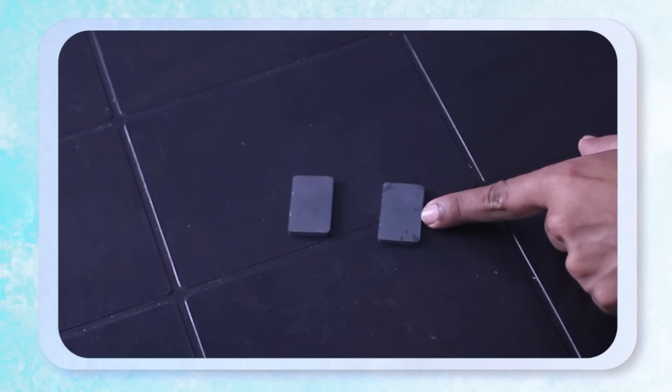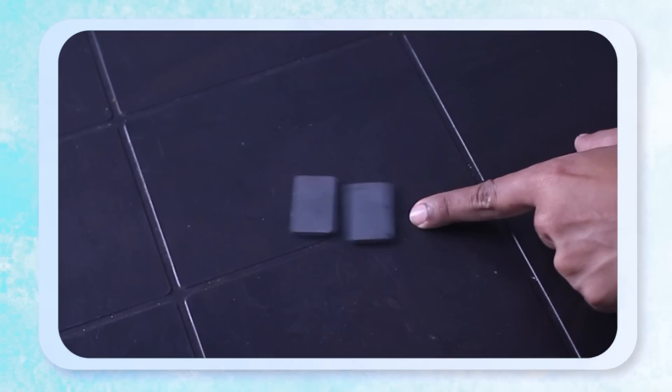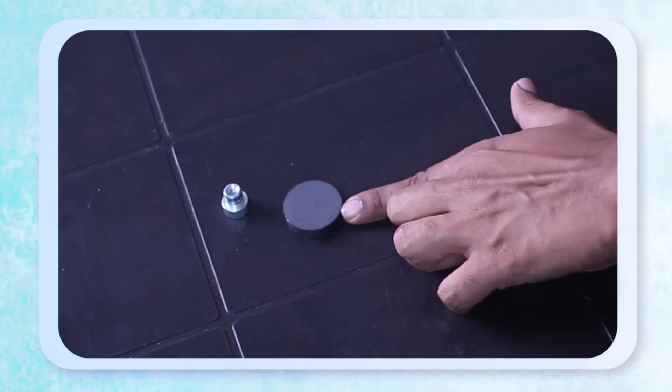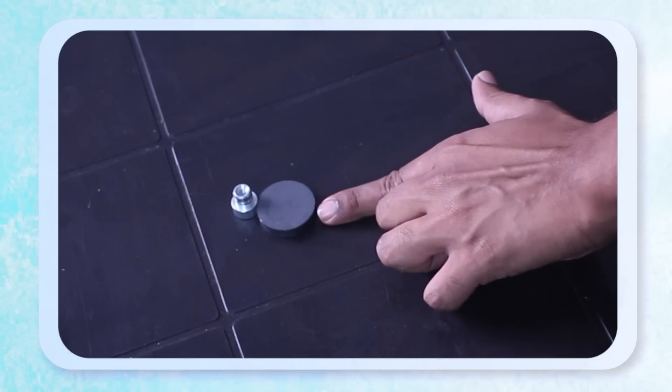Why is this so? See these two magnets, watch what happens when they attract each other. This magnet pulls on this magnet and this magnet also pulls on the other magnet. The same thing happens for this magnet and a piece of metal: the magnet pulls the metal piece towards it and the metal piece also pulls the magnet towards it.